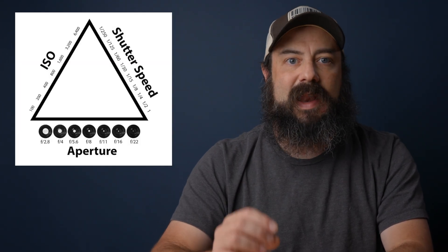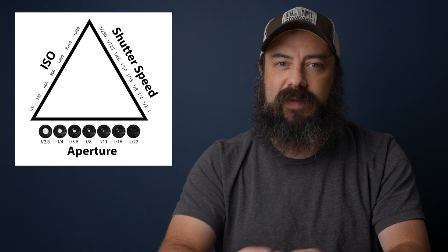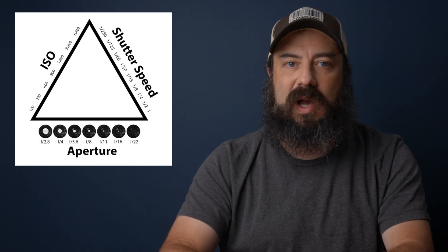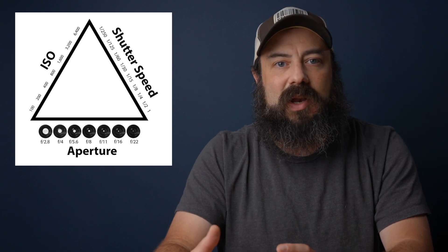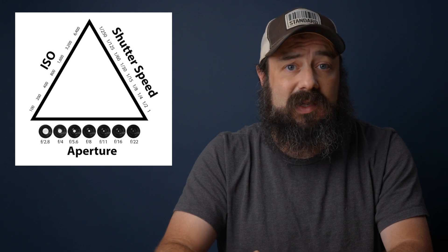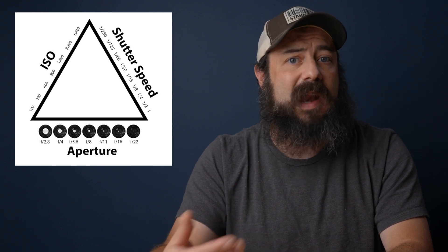Now let's start by talking about the exposure triangle. Most of us, when we started learning about photography or videography, were taught that to change the exposure in your image, there are three variables you can use: ISO, shutter speed, and aperture. And this is true. If you change those three variables in your camera, you will change the exposure, making it lighter or darker.